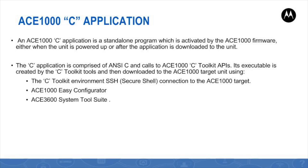A ready-compiled and linked C application can be installed to the ACE1000 target unit using any one of three options. Option 1: via a secured shell connection between an ACE1000 C toolkit virtual machine to the target unit. Option 2: the ACE1000 Easy Configurator web tool. Option 3: the ACE3600 system tool suite known as STS.